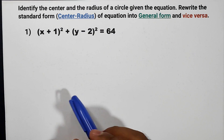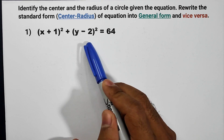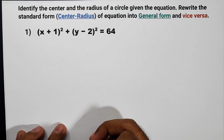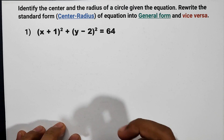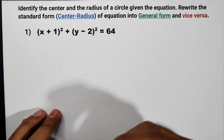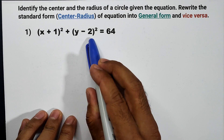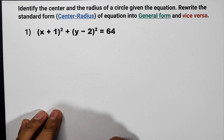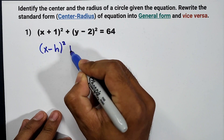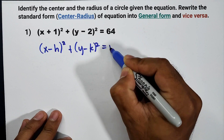Now let us have item number 1. The given is the quantity x plus 1 squared plus the quantity y minus 2 squared is equal to 64. To identify the center of the equation, simply find the additive inverse of h and k, since the equation is x minus h squared plus y minus k squared is equal to r squared.